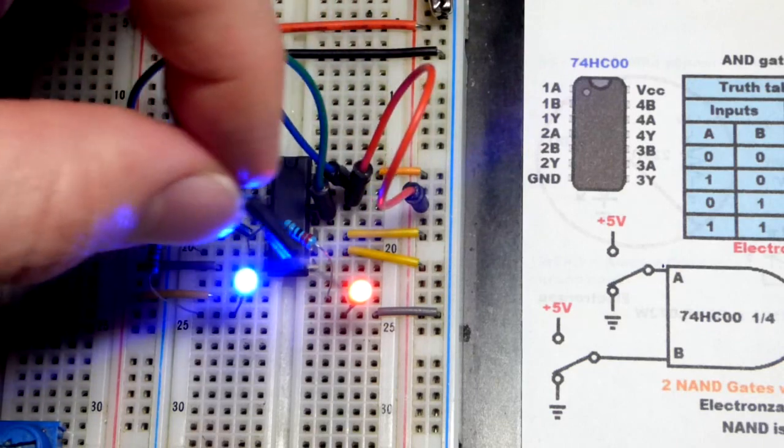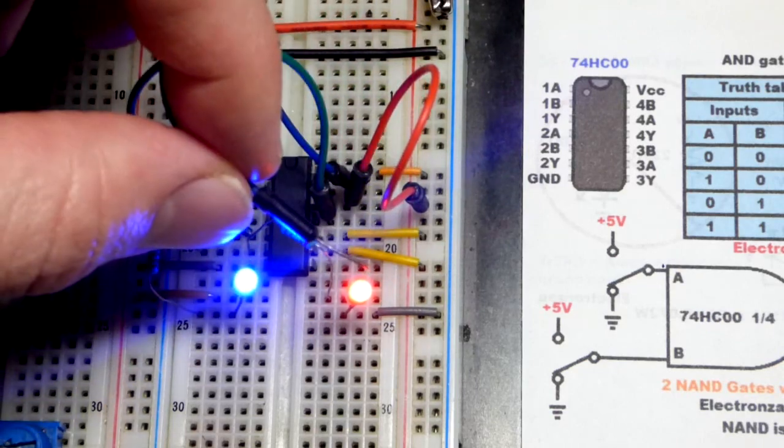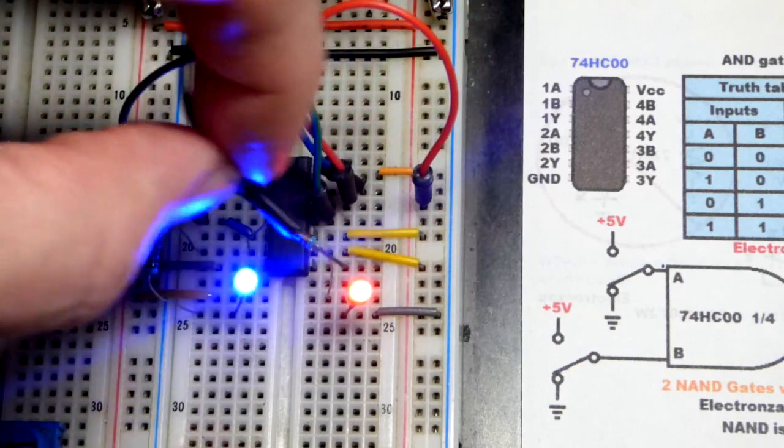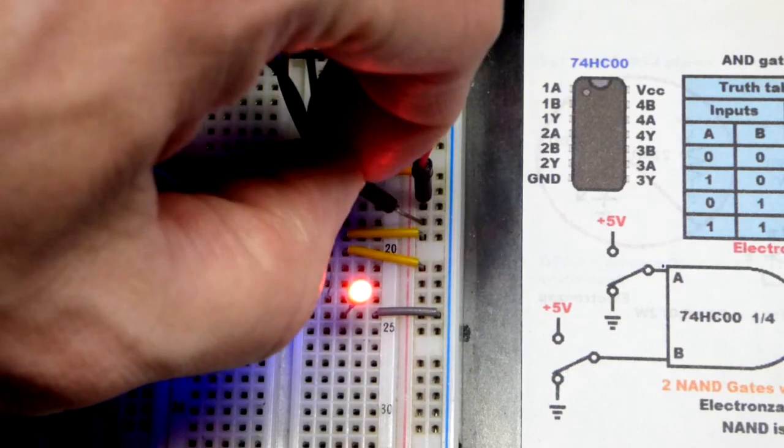Right now this is floating, it's picking up stray signals in the air from the AC current in the house. So it's going high and low rapidly. That's why they are flickering rapidly. So something to be aware of for this demonstration circuit.